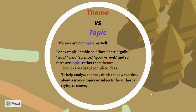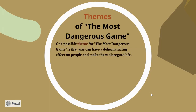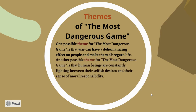To help analyze themes, think about what ideas about a work's topic or subject the author is trying to convey. Sometimes topics and themes can work together if you extend them to a full idea — so what is 'The Most Dangerous Game' trying to say about the effects of war? One possible theme is that war can have a dehumanizing effect on people and make them disregard life. We could use General Zarlov and Rainsford, since they both experienced World War I, looking at their behaviors, psyche, and mental state to help prove this. Another possible theme could be that human beings are constantly fighting between their selfish desires and their sense of moral responsibility.